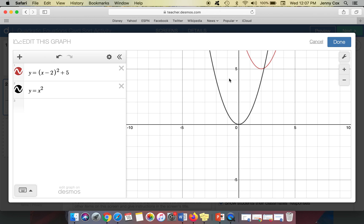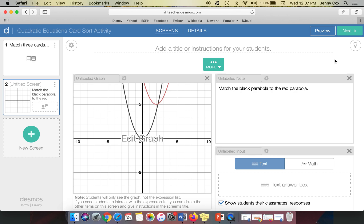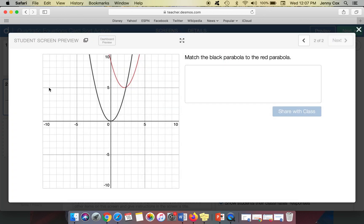And so I basically want them to make that where they can move it. Well, if I hit done, and then I go into preview, they don't get that screen off to the side that allows them to input functions. So there's no way for them to move this parabola. So it ends up being the same thing.